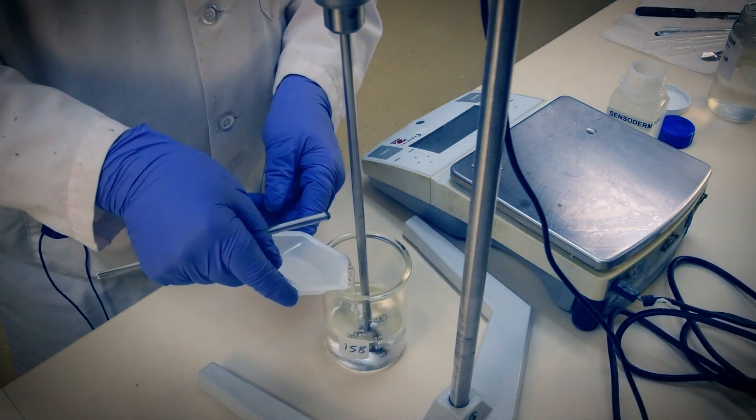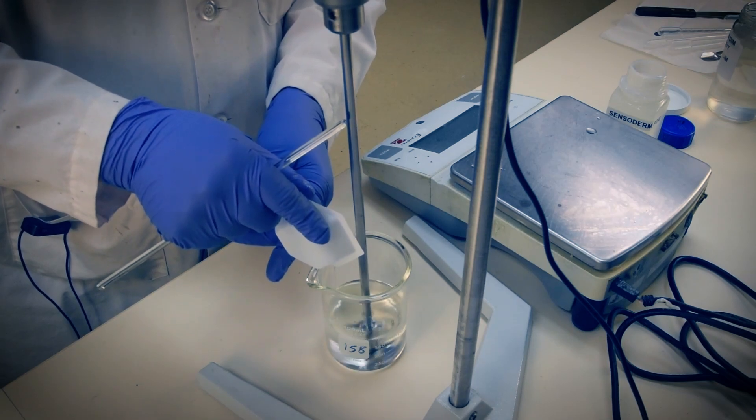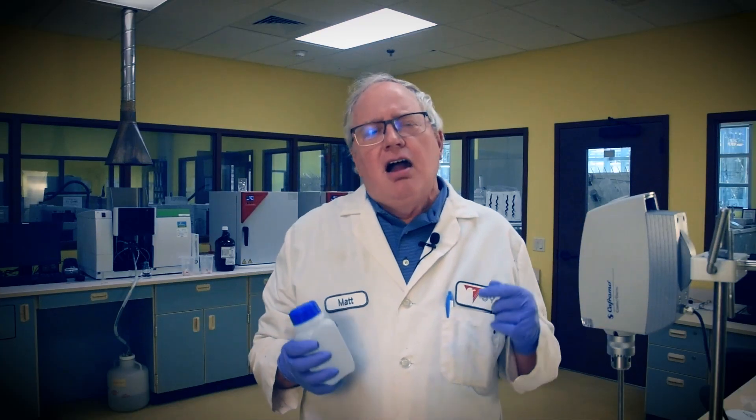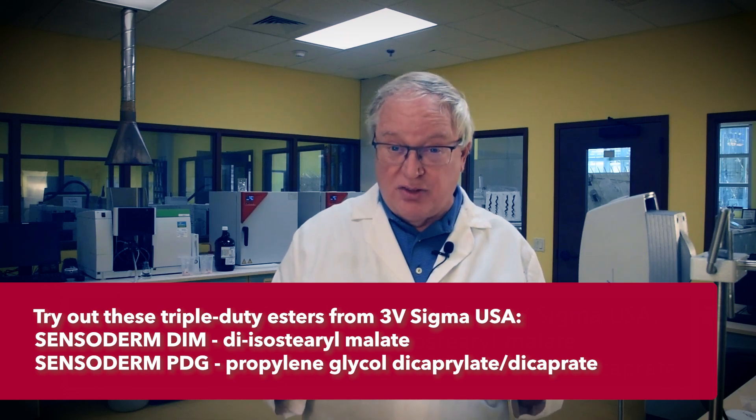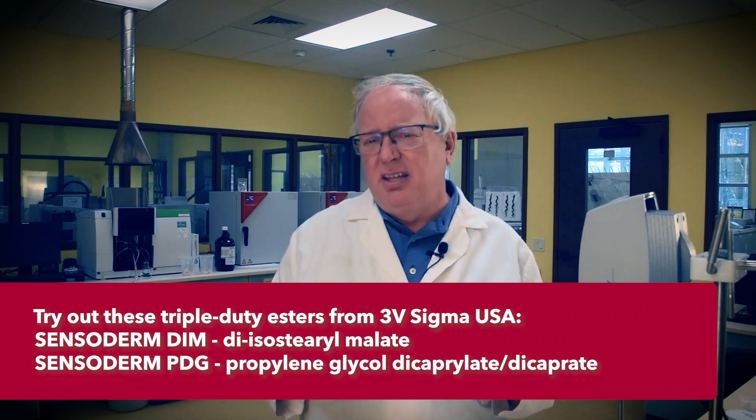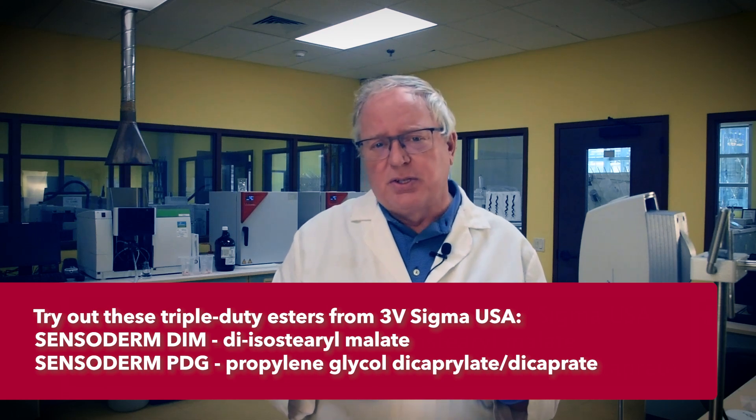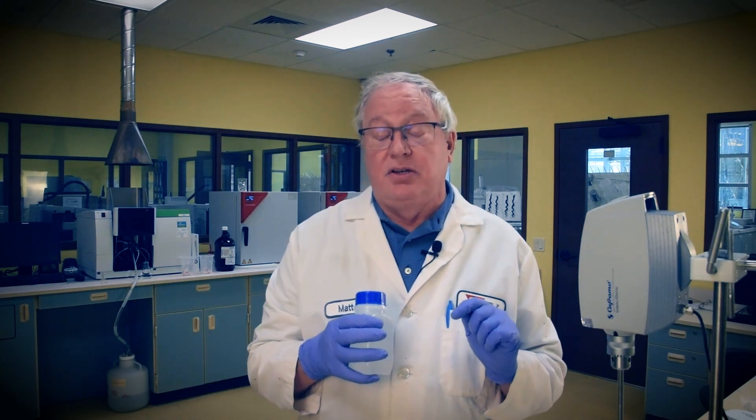Adding to this base are our own 3B sigma esters, Sensoderm DIM and Sensoderm PDG. Our two esters are doing triple duty here. They convey more substantial film forming than neopenthalene ester would do alone. Sensoderms apply a key attribute for an effective oil sheen: form a porous film around the cuticle, defending it from damage by agents in the environment and from styling tools.